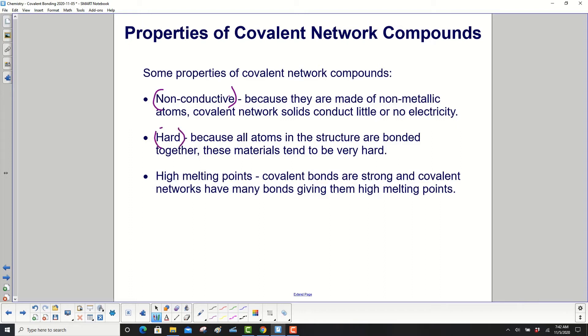They are hard. Because all the atoms in the structure are bonded together, these materials tend to be very hard. High melting points. Covalent bonds are strong, and covalent networks have many bonds, giving them high melting points.